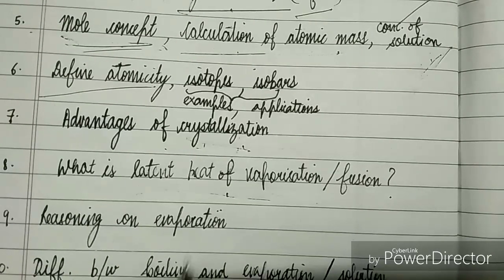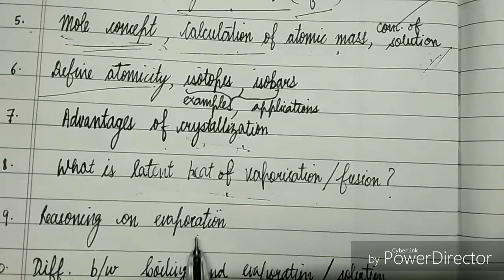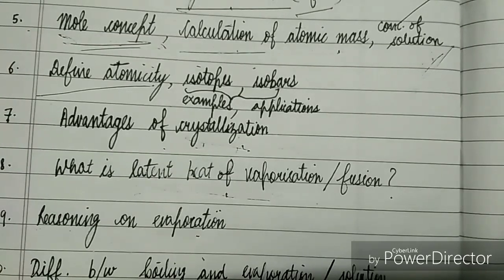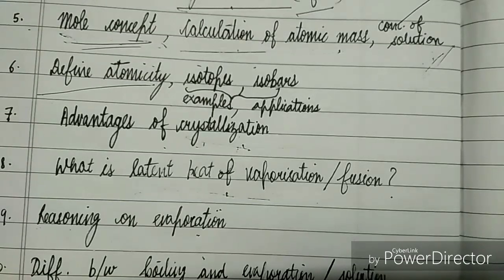Then you have reasoning on evaporation. Basically, the factors affecting evaporation you should know by heart. They are the reasons for questions like why clothes dry quickly during summers and other questions like that acetone example. Knowing the factors affecting evaporation would help you solve the reasoning questions.